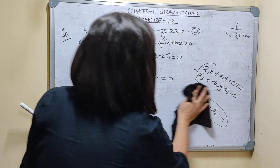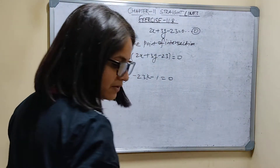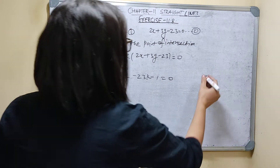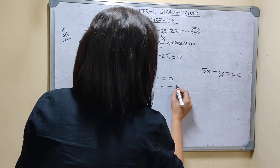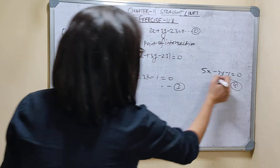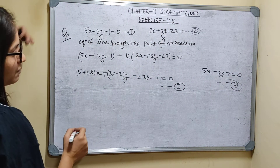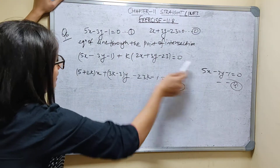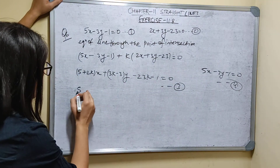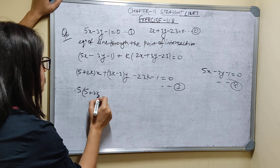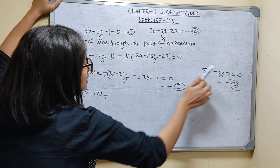You can see 5x minus 3y minus 1 is equal to 0 — this is the given line (equation 3). If both lines are perpendicular, the condition A1·A2 plus B1·B2 equals 0 should be satisfied. So we identify the coefficients: A1 is 5 plus 2K, B1 is 3K minus 3, A2 is 5, B2 is minus 3.